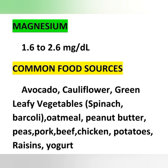The next mineral is magnesium. Normal serum magnesium level is 1.6 to 2.6 milligrams per deciliter. Common food sources of magnesium include avocado, cauliflower, green leafy vegetables such as spinach, oatmeal, peanut butter, peas, beef, chicken, potatoes, raisins — which are dried grapes — and yogurt.